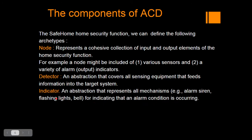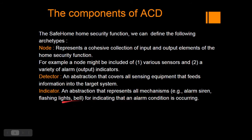An indicator is an abstraction that represents all mechanisms for indication. Based upon the sensor — temperature or any other value — it gives an indication of an alarming condition. They represent the mechanism and are called indicators. Examples include alarm, siren, flashing lights, or bell sounds.